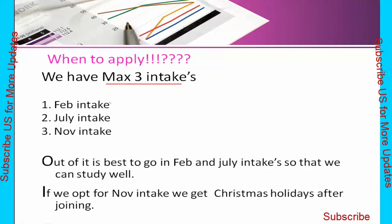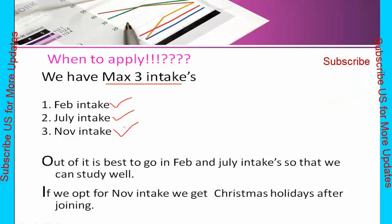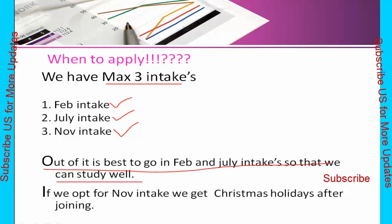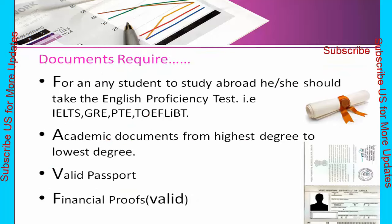The next step is when to apply. We have maximum three intakes: February Intake, July Intake, and November Intake. These are the three intakes where students go to study abroad. Out of these three, I suggest going for February Intake and July Intake. Because if you go for the November Intake, after November comes December, and December worldwide is Christmas holidays. So you will be coming back to your native place, taking a flight back, spending time with family, and there will be a break in your studies. If there is a break in your studies, you will face a backlog problem. So never go with the November Intake.